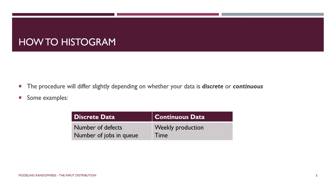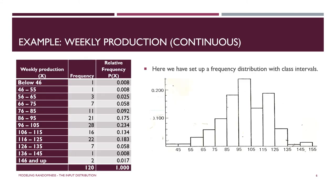We'll see examples of creating histograms from discrete data and from continuous data. Anything having to do with time is going to be continuous; number of defects or number of jobs in queue is going to be discrete. On the next few slides we'll see some examples of data collected and graphed into frequency distributions — in other words, histograms.